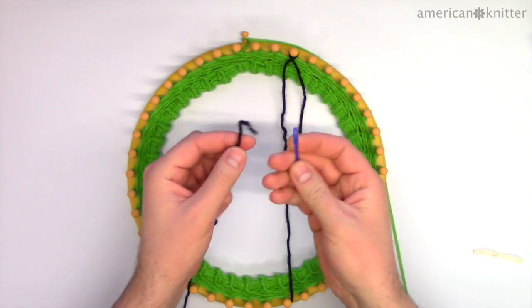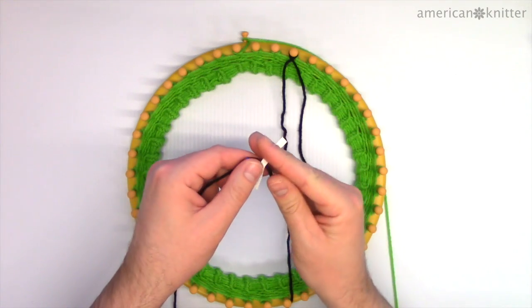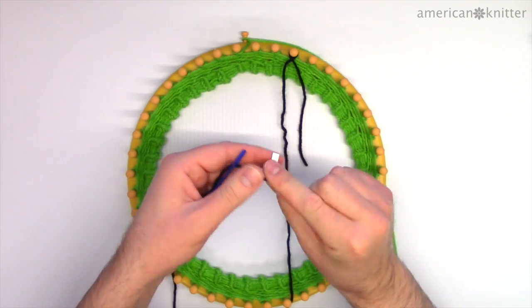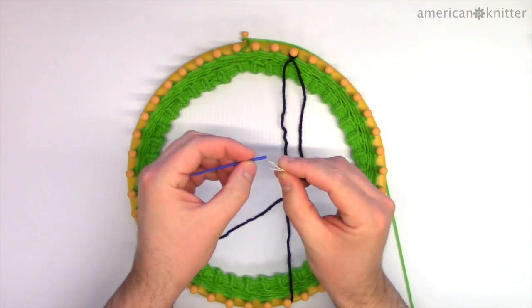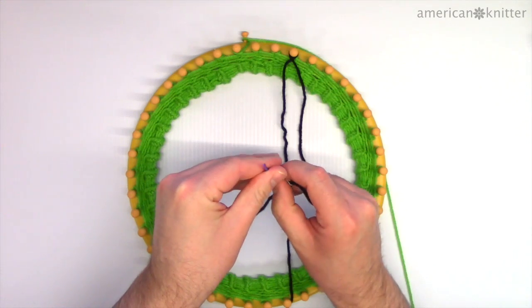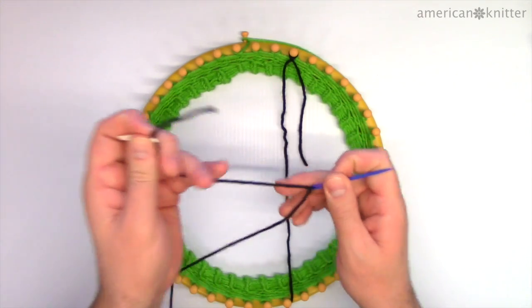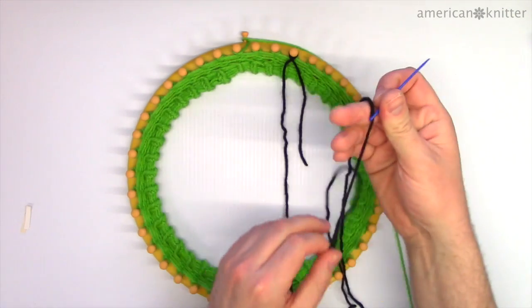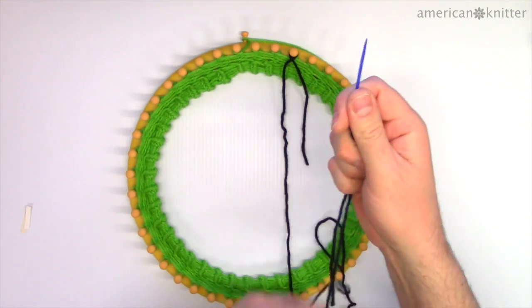On the other side of the black yarn, thread a yarn needle. Here's the easy way to thread a yarn needle. Take a small strip of paper and fold it over the yarn. Then slip the paper through the eye of the yarn needle and pull. We'll be working with a single strand of black yarn, so leave just a short length on the other side of the needle.